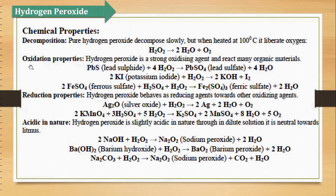The second property is oxidation. Hydrogen peroxide is a strong oxidizing agent aur yeh bahut saare compounds ko oxidize karta hai. For example, lead sulfide mein se jab hydrogen peroxide pass karenge to uska lead sulfate plus water ban jayega. Usi tarah potassium iodide ki oxidation karate hain hydrogen peroxide ke saath, to potassium hydroxide aur iodine aa jayega. Ferrous sulfate plus sulfuric acid aur H₂O₂ jab mix karte hain to ferric sulfate plus water aa jayega.